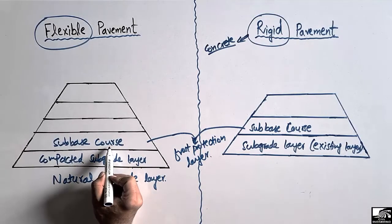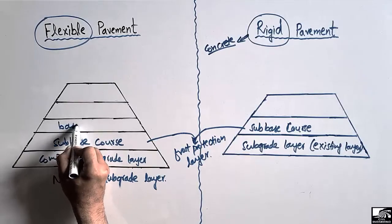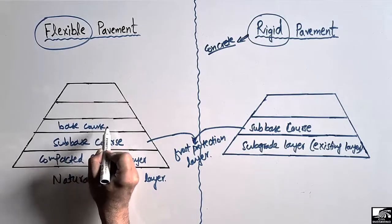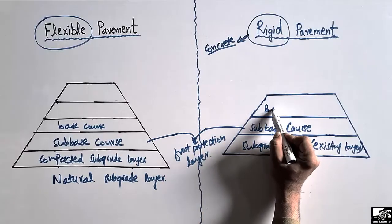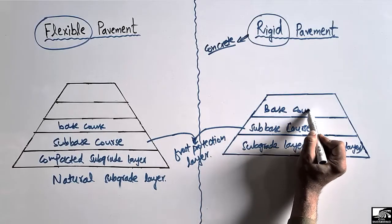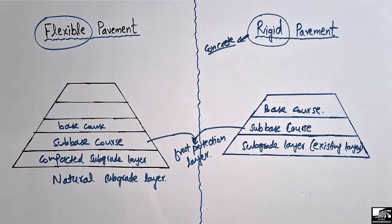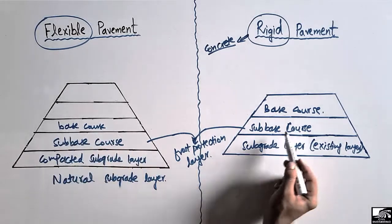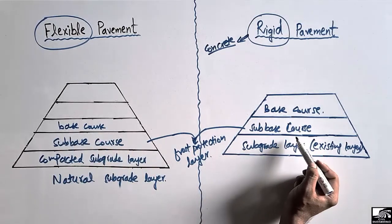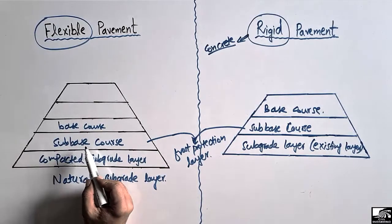On top of the subbase course, in the case of flexible pavement we provide the base course, while in the case of rigid pavement we also have base course material. These three layers — subgrade, subbase, and base course — are mostly the same in both types of pavement.